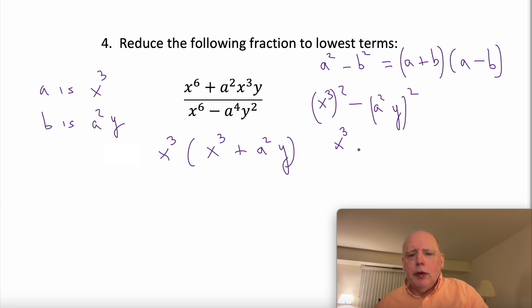So this is going to be x to the cubed plus a squared y times x to the cubed minus a squared y. And that's what we'll put in the denominator.